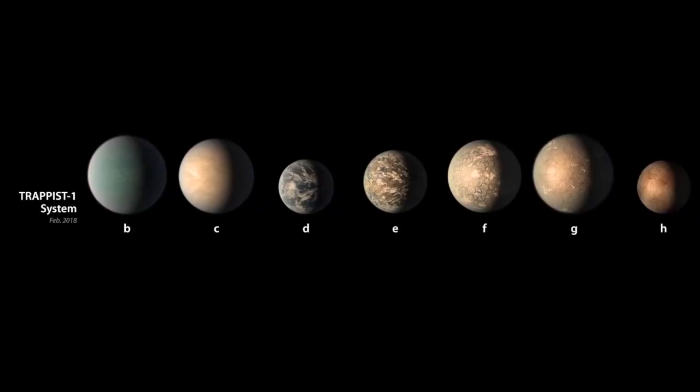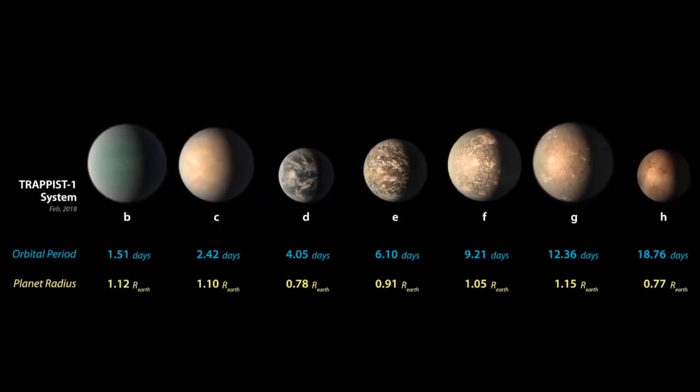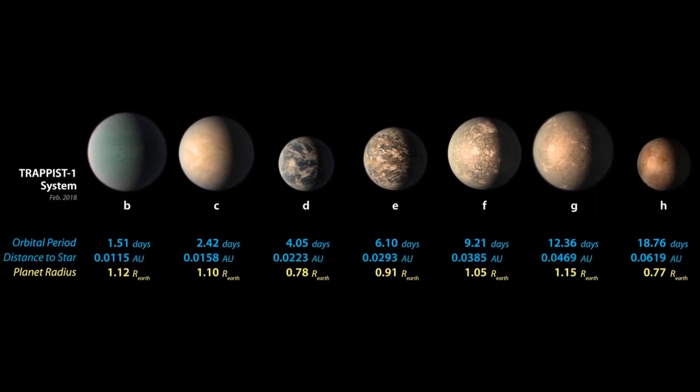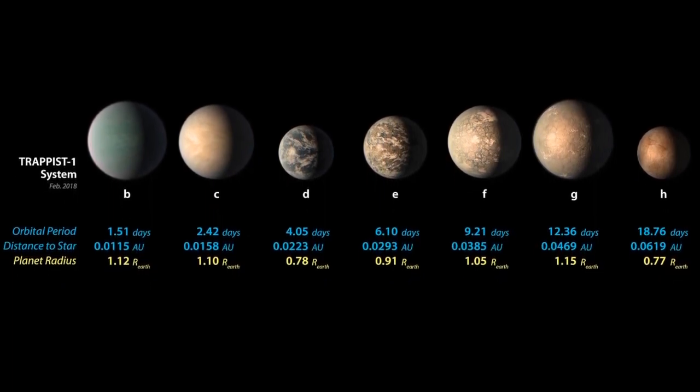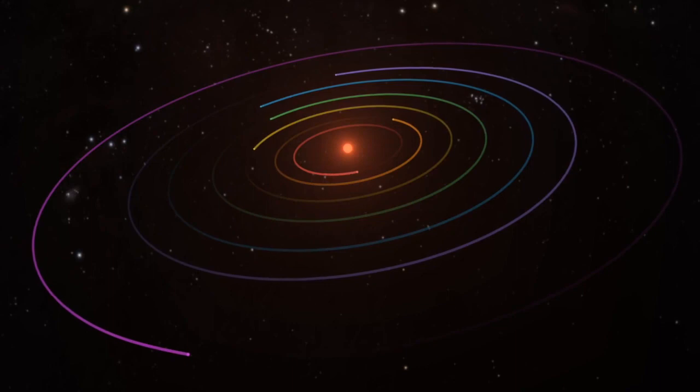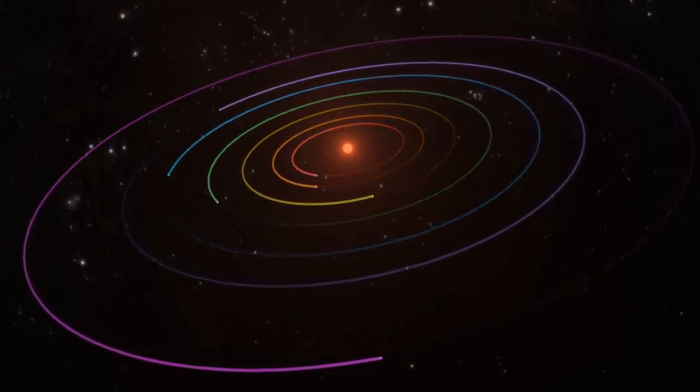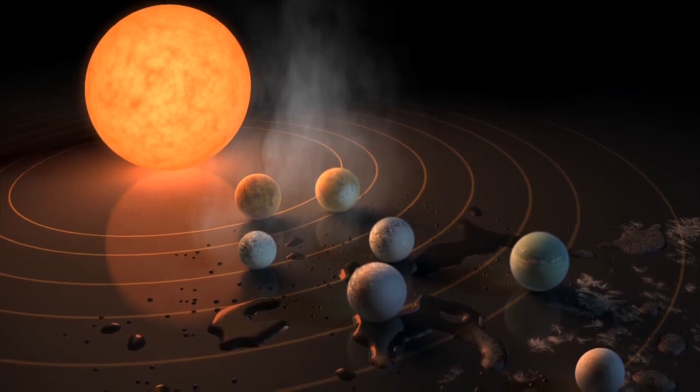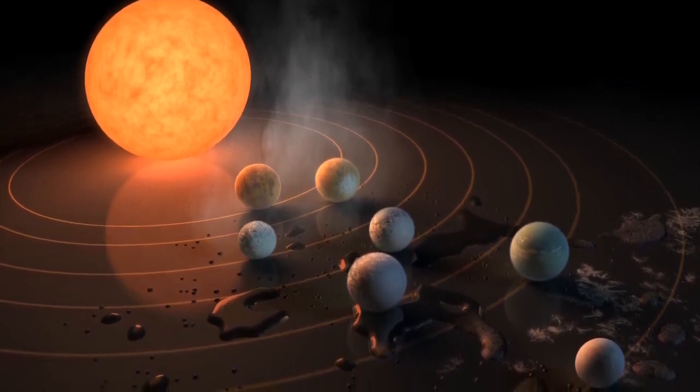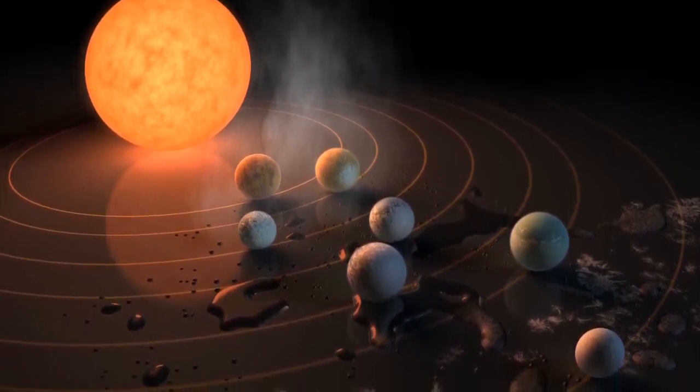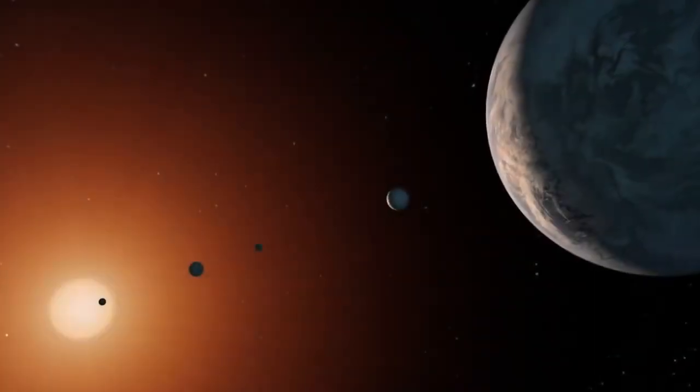Scientists have discovered seven rocky, Earth-like planets orbiting it. Four of these planets are in the star's habitable zone. This means they orbit at just the right distance, and thus have the right temperature for liquid water to exist on the surface. That's four planets that might have one of the most essential building blocks for life.